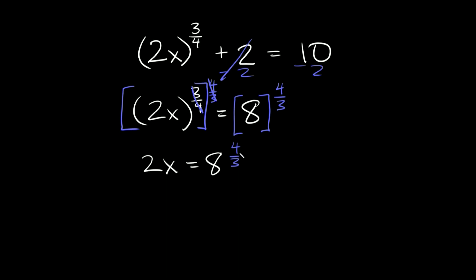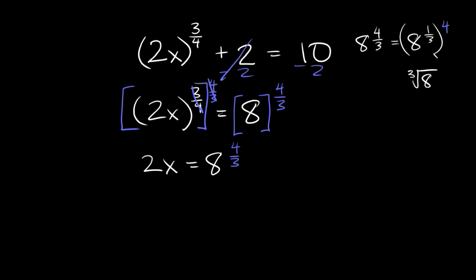Now how do we simplify 8 raised to the 4/3? One thing I like to do is take out the numerator and replace it with a 1. So we can write 8 to the 4/3 as 8 raised to the 1/3, and then raise that whole thing to the 4. Now 8 raised to the 1/3 is the same thing as the cube root of 8, because whenever you raise something to the 1/3 power, it's the same thing as taking the cube root of it.